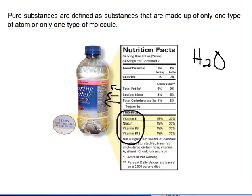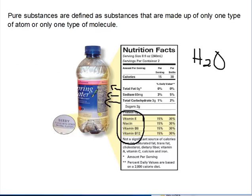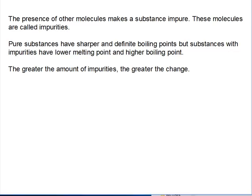Please take note: purity in chemistry does not mean cleanliness. The presence of other molecules makes a substance impure, so these molecules are called impurities. The impurities in this water are making it impure, and they affect the properties of the water. Pure substances have a sharper and more definite boiling point, but substances with impurities have a lower melting point and a higher boiling point.